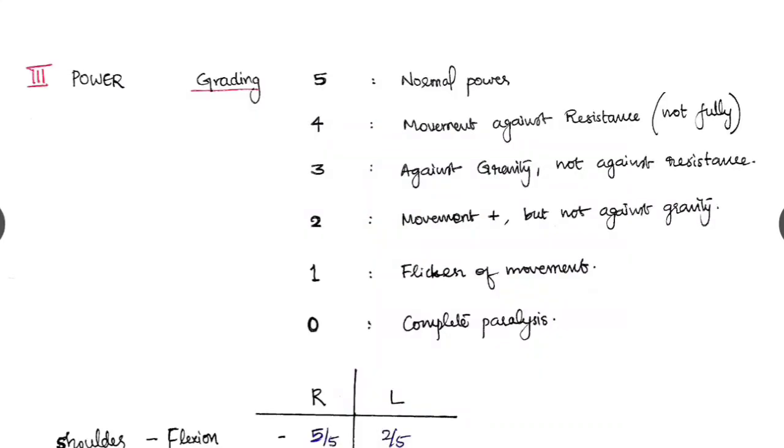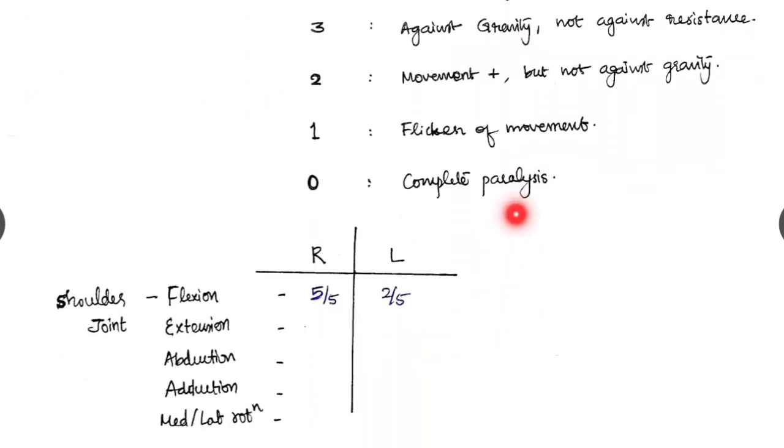Next is the power. Power of each and every joint we have to check, and grading must be done. Grade 5 is normal power. Grade 4 there is movement against resistance but not fully, there is some deficit. Grade 3 is there is movement against gravity but not against resistance. Grade 2 there is movement but not against gravity. Grade 1 there is a flicker of movement. And grade 0 it is complete paralysis. And this is how we have to tabulate.